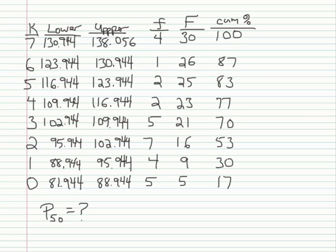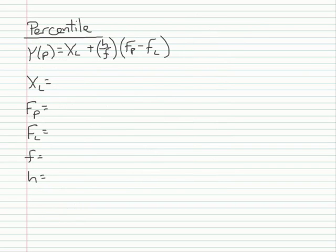To find x sub l, I need to find the interval containing the percentile point. Looking at the cumulative percentage, I need to find the one that has 50% in it. The second interval goes up to 30%, and the third interval goes up to 53%. So my 50th percentile is in that interval. I need the lower bound of that interval, which is 95.944. So x sub l is 95.944.